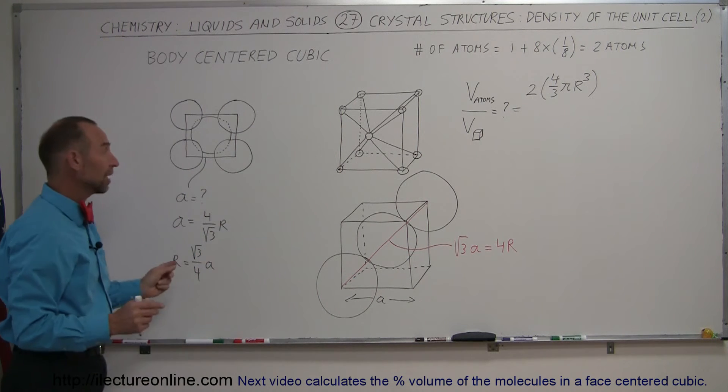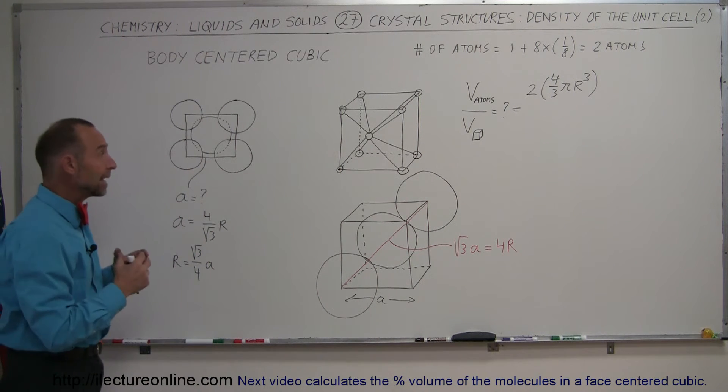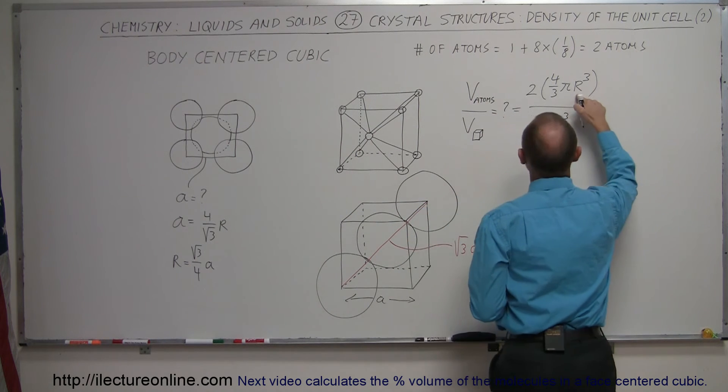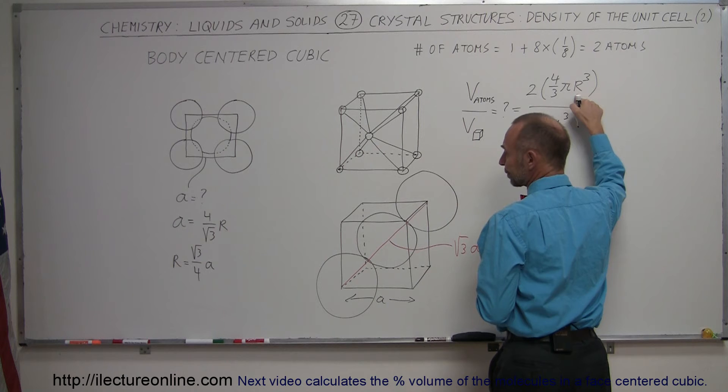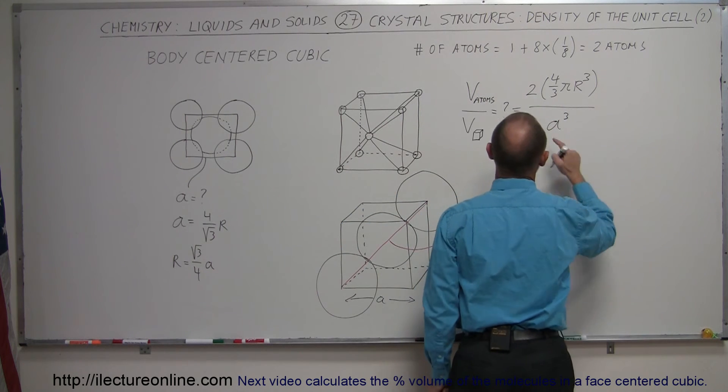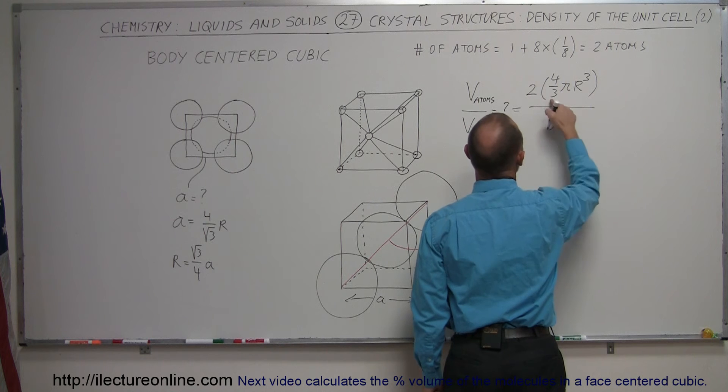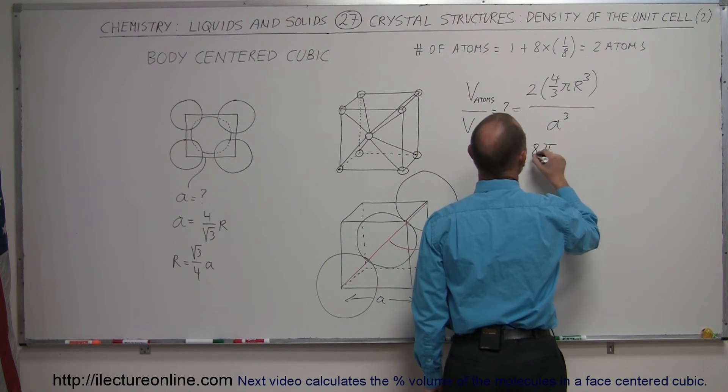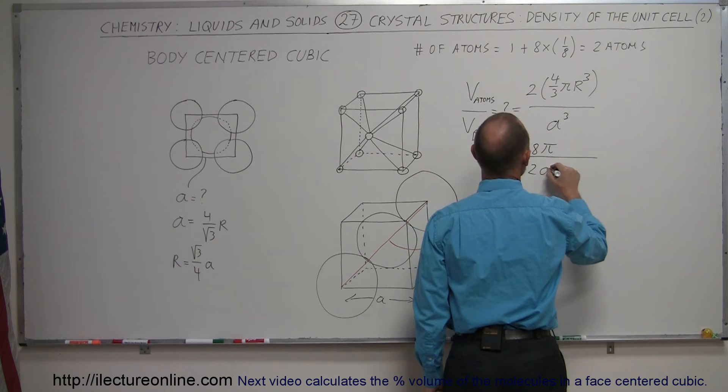Now, keep in mind that the volume of the cube is going to be a cubed. So this is this number divided by a cubed. Turning this into a's, what we do is replace r by this quantity. Multiplied by two times four, bringing the three down here, we have this equal to eight pi divided by three a cubed.